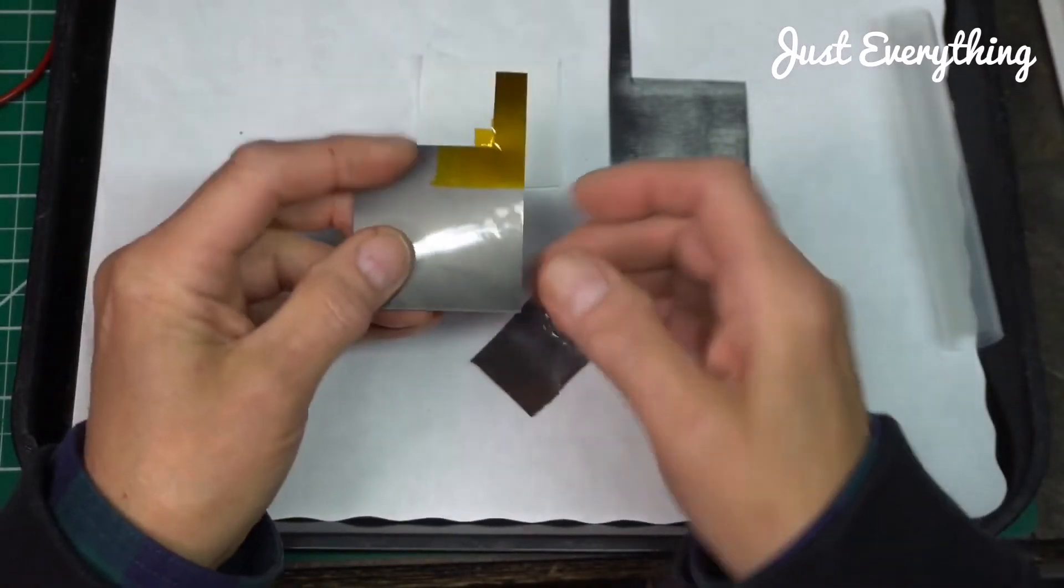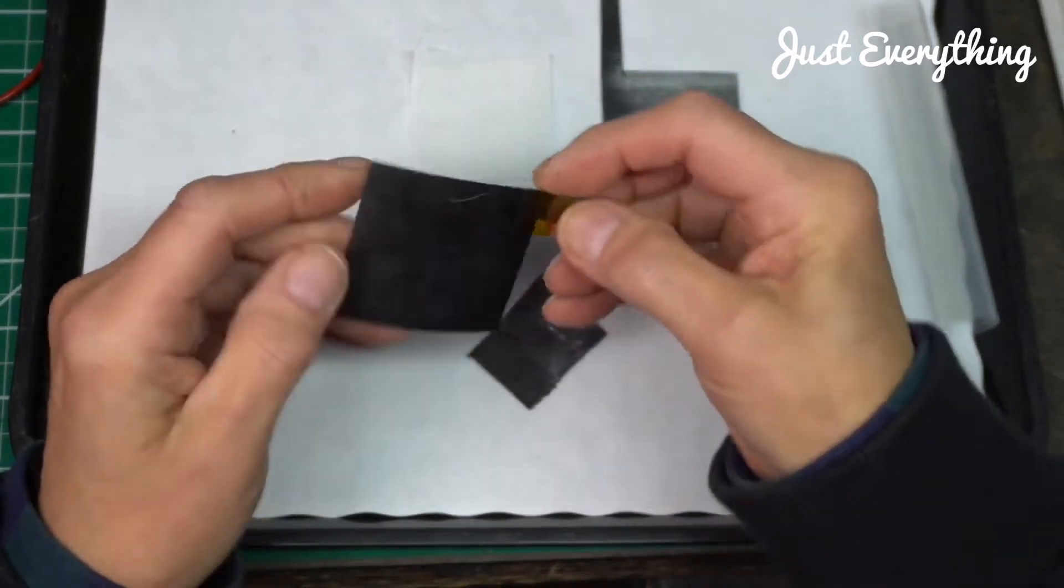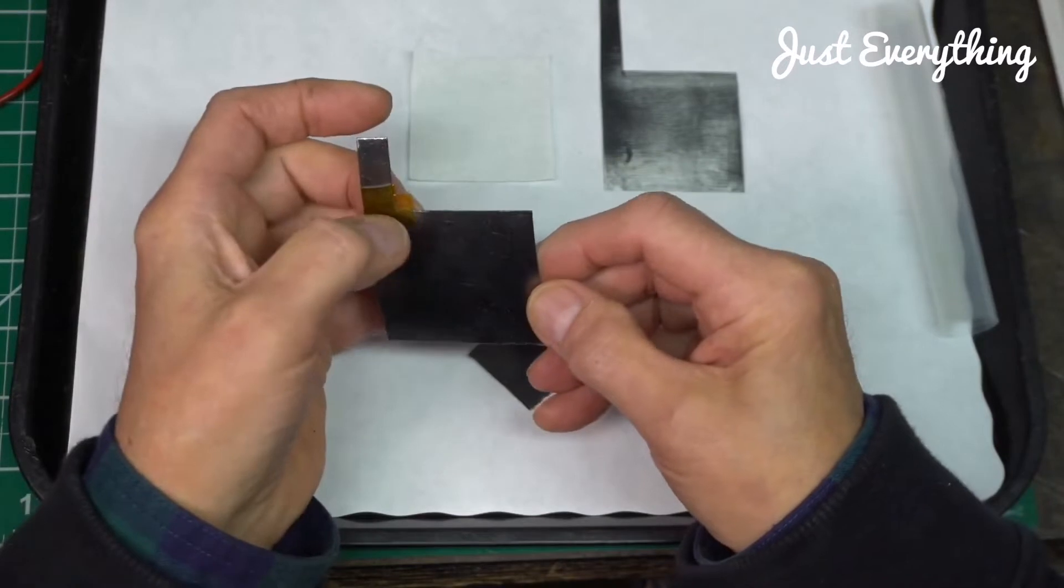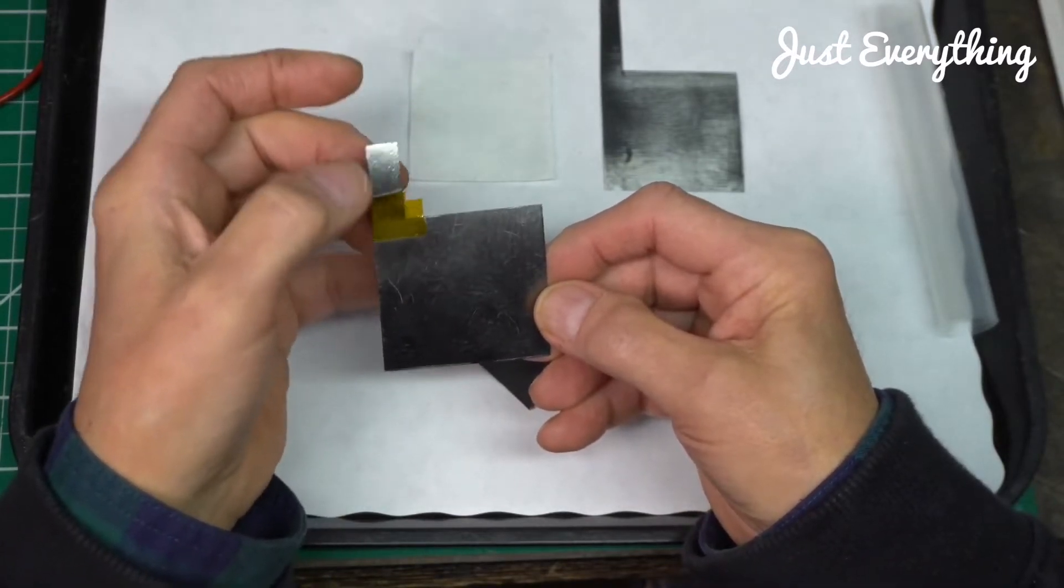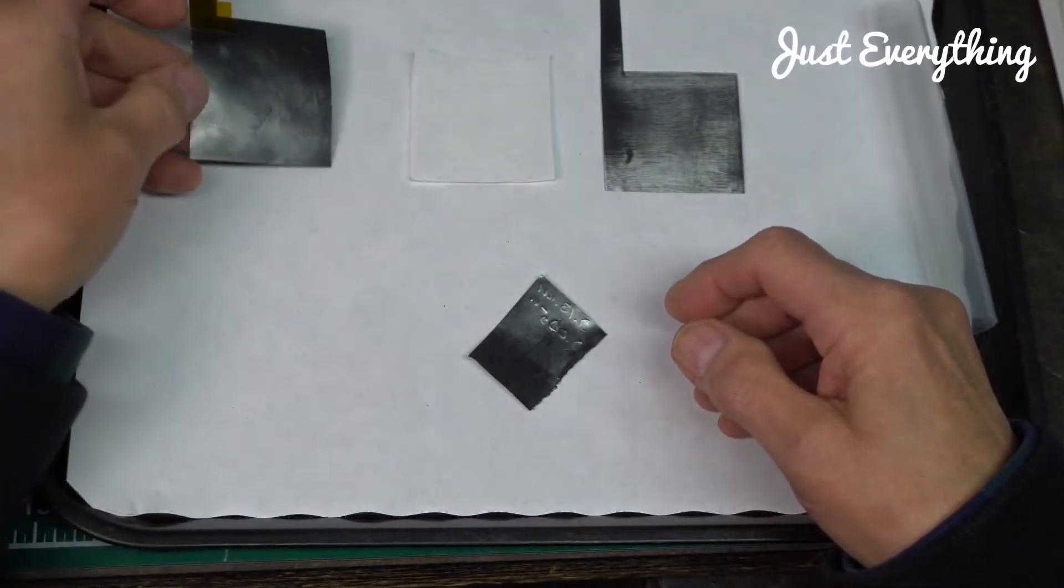Also over here you can see that I added some Kapton tape to this electrode, because it tends to tear right at this junction here, the cap and the main part of the electrode.